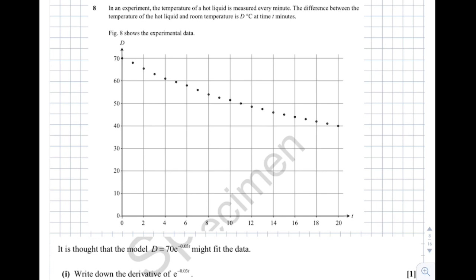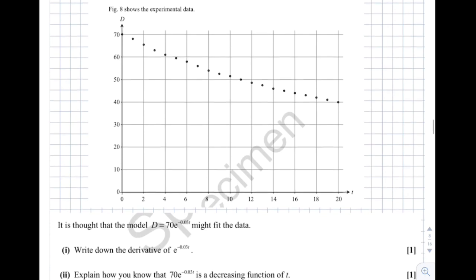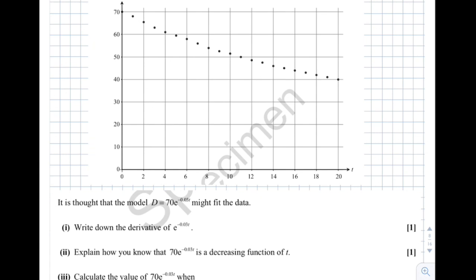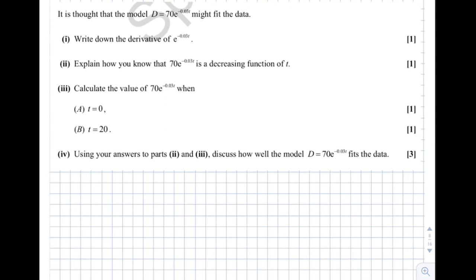Question 8: the temperature of a hot liquid is measured every minute. The difference between liquid temperature and room temperature is d degrees at time t minutes. The model d equals 70 e to the minus 0.03t might fit the data. Write down the derivative of e to the minus 0.03t. You need to know that if you have e to the kx, the derivative is ke to the kx. So here the derivative is minus 0.03 e to the minus 0.03t.